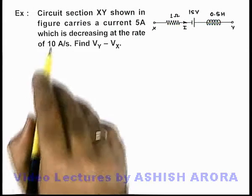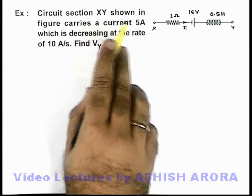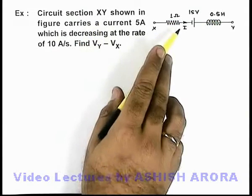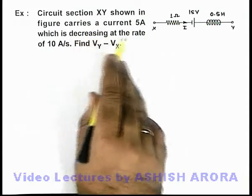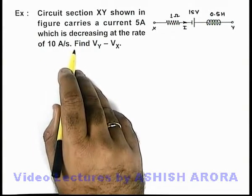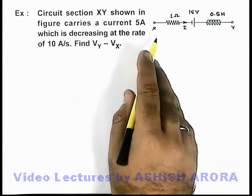In this example, we are given that a circuit section XY shown in the figure carries a current of 5 amperes, which is decreasing at a rate of 10 amperes per second, and we are required to find Vy minus Vx.